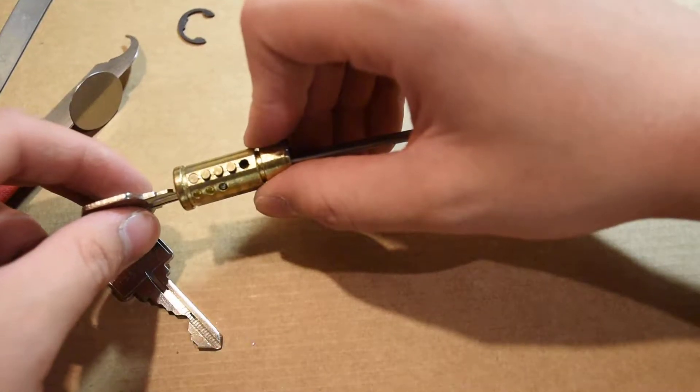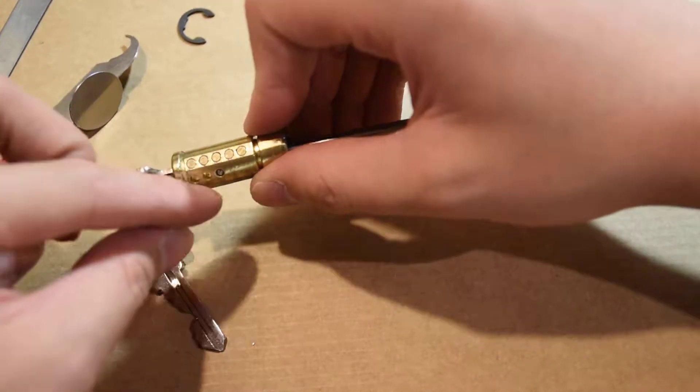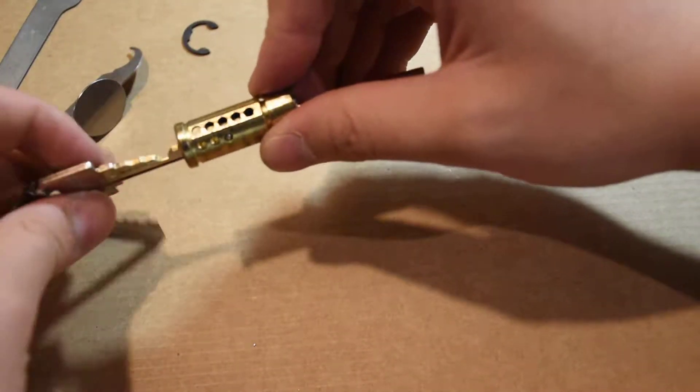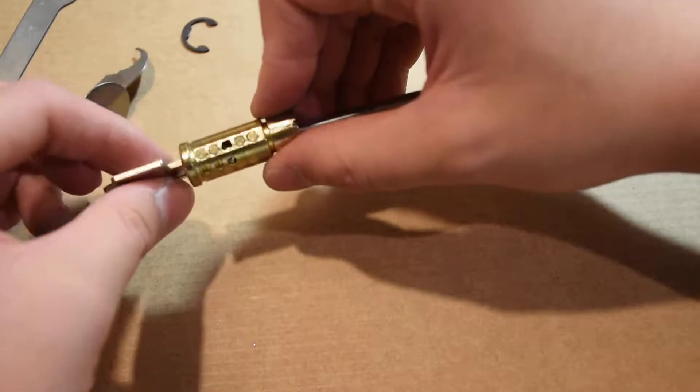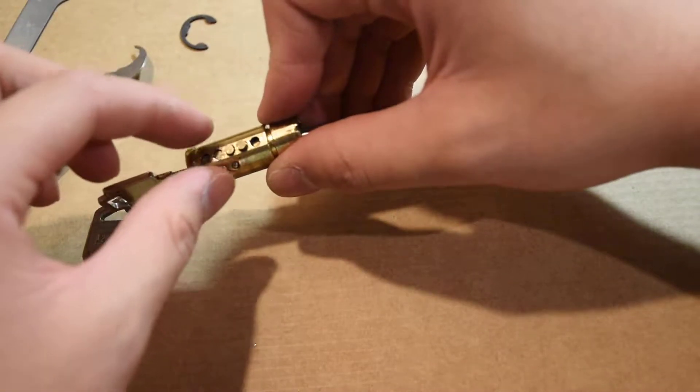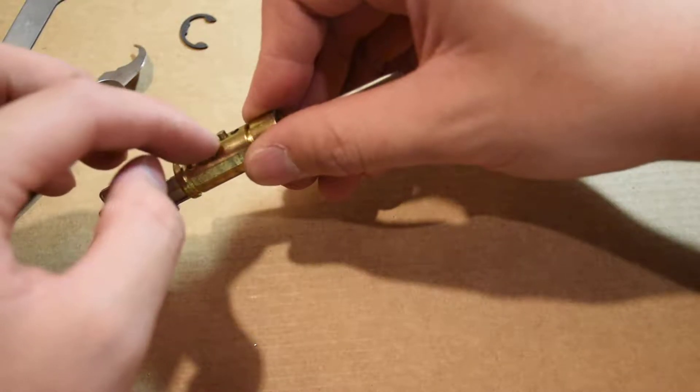If I had the key, and it's the correct one, you see all the pins align. If I don't have the right key, even if it is one position, you see this position is too low, this lock will not open. Or, if the position was too high, this will prevent the key from turning.